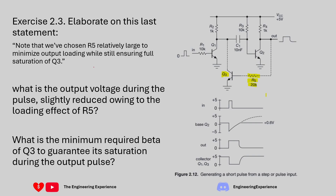Before we dive into the questions, I want to quickly explain how this circuit works. Without Q3 and R5 we've already spoken about how this circuit works in detail in the 2.2 exercise video, but I'll quickly go over how Q3 and R5 help. Starting from this side: we have a 5 volt power supply, and the user can press a button to trigger a positive voltage — let's call it 5 volts.